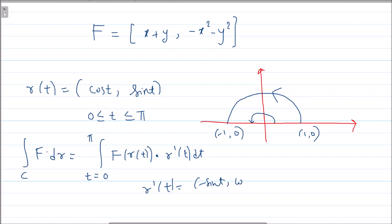What is r'(t)? It is (-sin t, cos t). And what is F of r(t)? In the vector field, you replace x by cos t and y by sin t. So we get (cos t + sin t) for the first component, and (-cos²t - sin²t) = -1 for the second component.